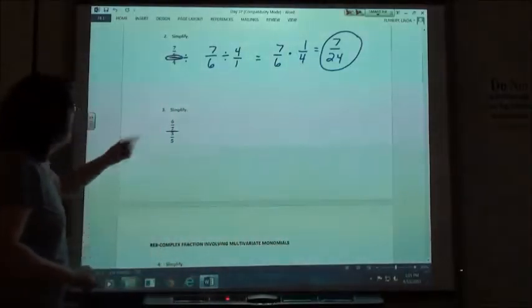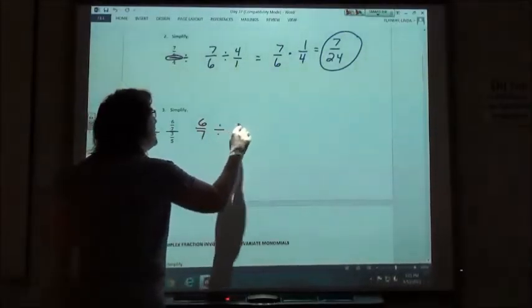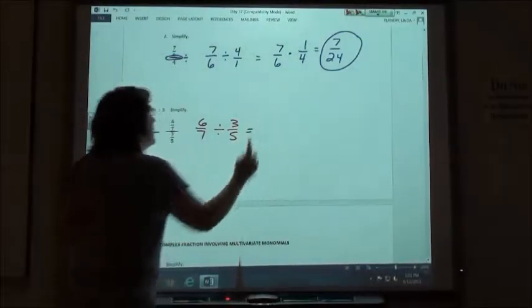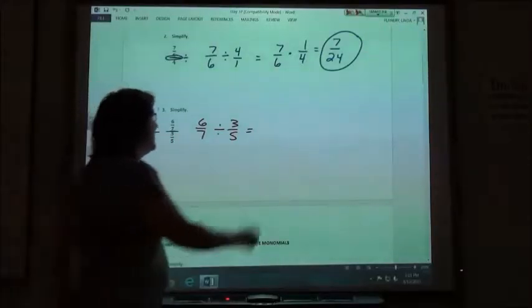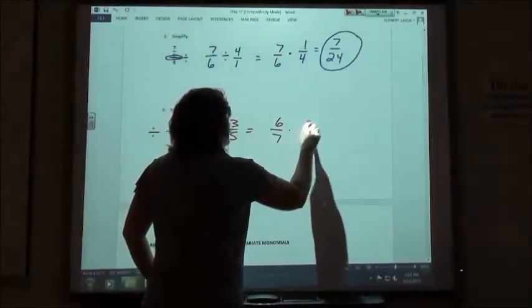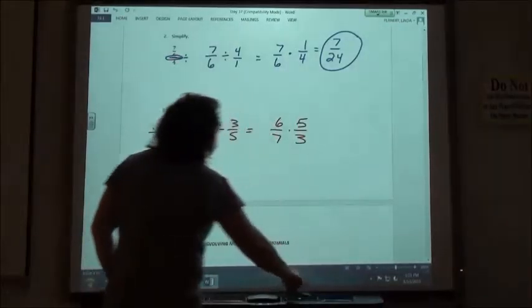And same thing on number 3. Here's where my division would be. So I'm taking 6 7ths divided by 3 5ths. So I would change my problem to 6 7ths times 5 3rds. I can do a little bit of reducing on that one.